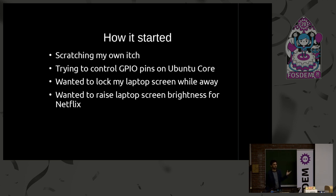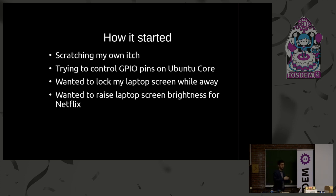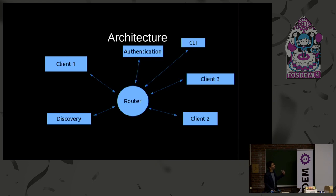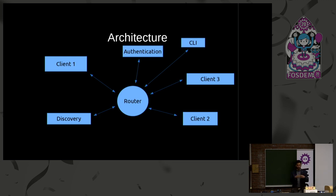Most of us know that if you watch Netflix on your mobile phone and go full screen, it automatically raises the brightness of the device. That was missing for desktops, so I wrote a Chrome extension to do that. The extension sends a request to the daemon running on my desktop, which raises the brightness by writing those values to the backlight driver on my Linux system. These use cases led me to write the thing, and over time I broke it down into different components so it could be reused by different people for different use cases.